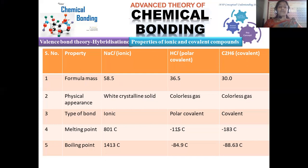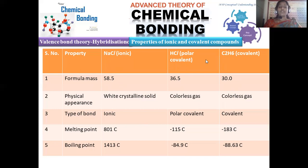Comparing formula mass: sodium chloride, formed by sodium and chlorine, has a mass of 58.5. Hydrochloric acid has a formula mass of 36.5. Ethane, formed by two carbons and six hydrogens (each carbon contributing 12 atomic mass units and hydrogen contributing 1), has a formula mass of 30.